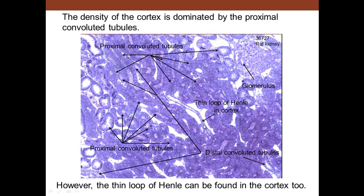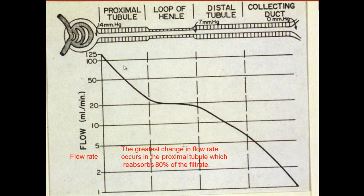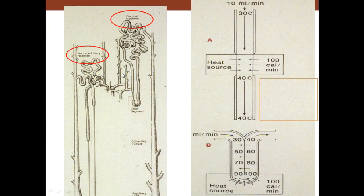We can see the rate of flow through the different portions of the nephron: proximal tubule, loop of Henle, distal tubule, and the collecting tubule. The greatest change in flow — from 125 ml per minute down to about 20 — occurs in the proximal tubule. The proximal tubule absorbs about 80% of the filtrate. Overall, the tubule absorbs about 99%. For every 100% produced, you have about 1 ml of urine produced.